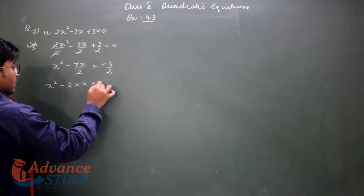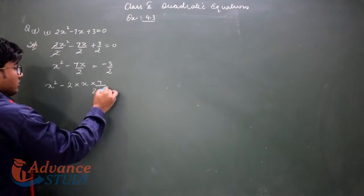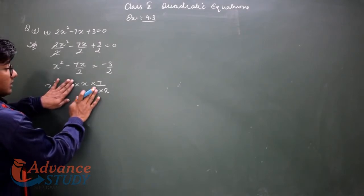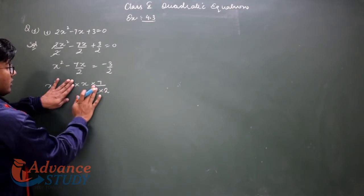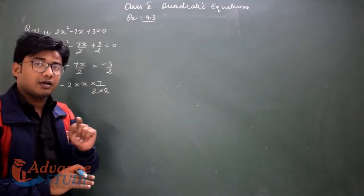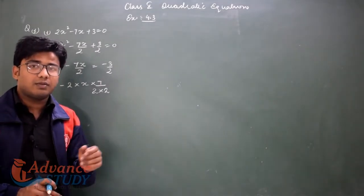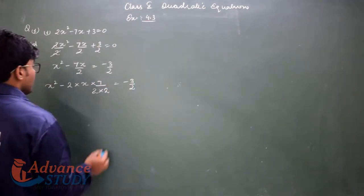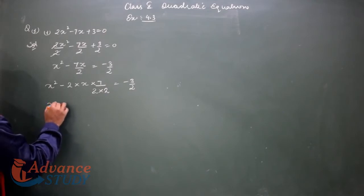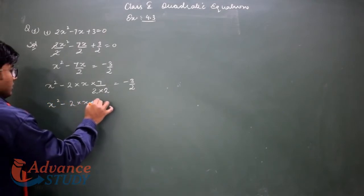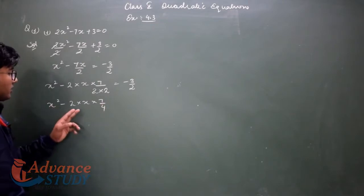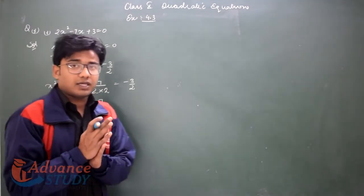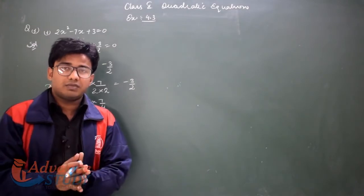So we write x multiplied by 7 upon 2. Now using the identity a² - 2ab + b², we have x² minus 2 into x into 7 upon 4. This is in the form a² - 2ab, so we need to add b² to both sides to complete the square, equal to minus 3 upon 2.